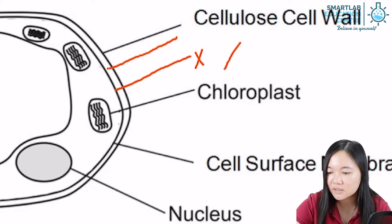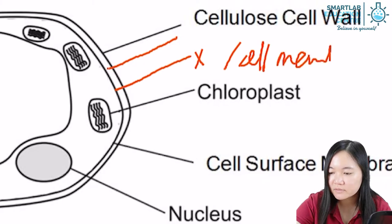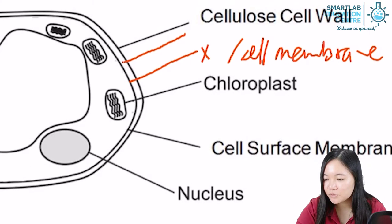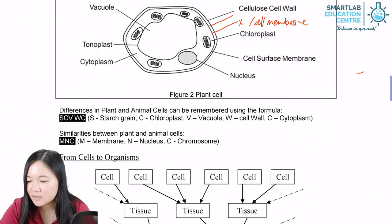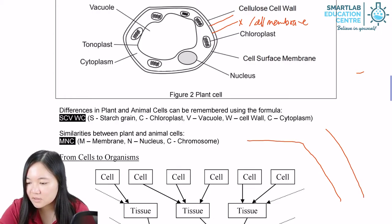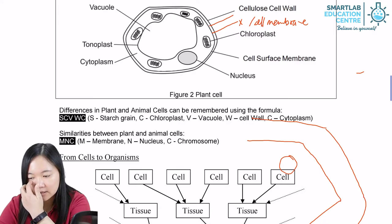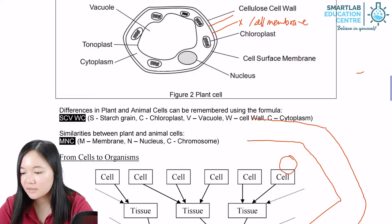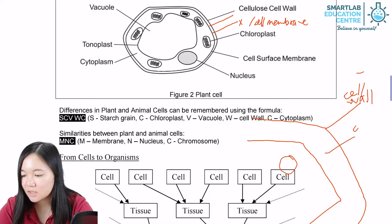Instead, it is the cell membrane. So take note: if I were to amplify the lines, if this is the cell with the nucleus et cetera — if it's labelled here, it's called the cell wall. If it's labelled here, you can also call it cell wall. But if it's pointing towards here, please don't call it cell wall anymore. This is the cell membrane.